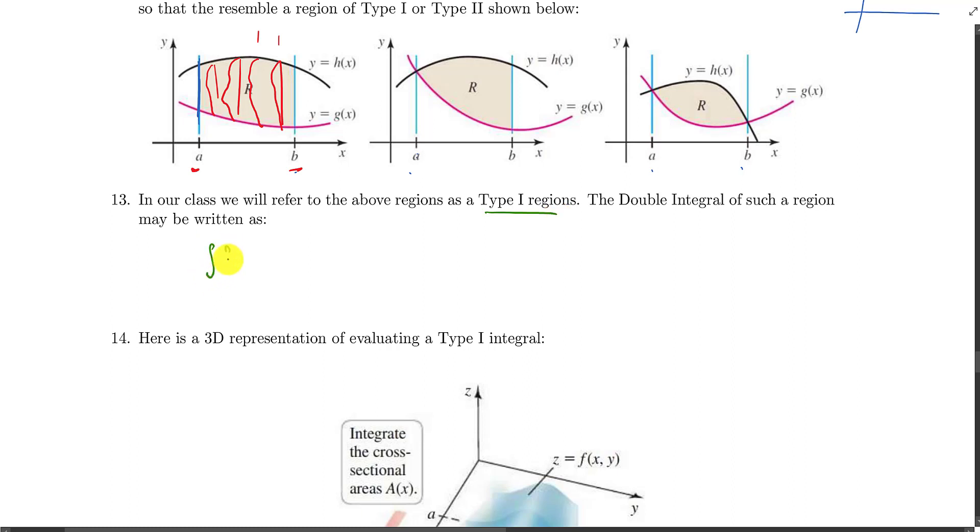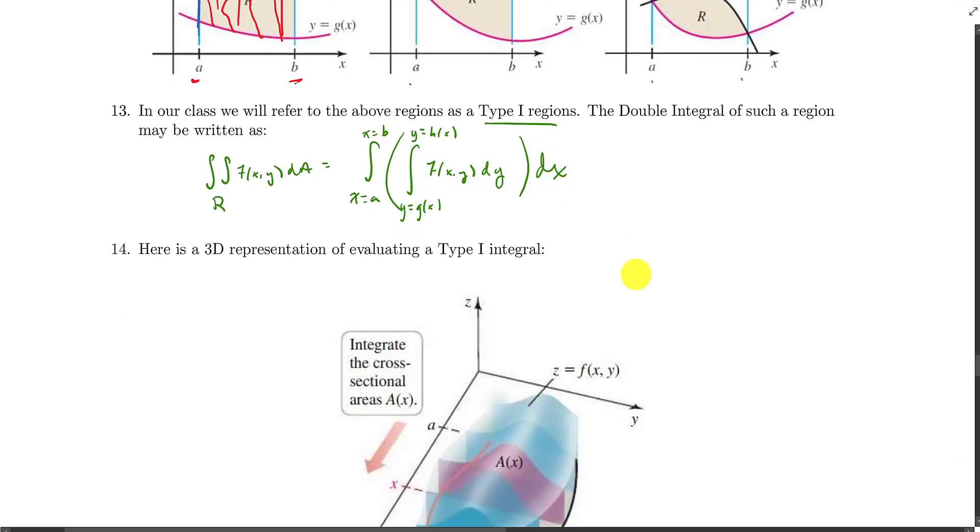But for right now let's say how do we integrate a region that we describe as this type 1 region? The answer is, rather than computing the double integral over the region R for our function f of x, y, dA, we can go ahead and compute it this way. We're going to compute it as an iterated integral from x equals a to x equals b, and then from y equals the lower curve, so g of x, up to y equals the upper curve, h of x, of our f of x comma y. The innermost integral is with respect to y, and then dx.